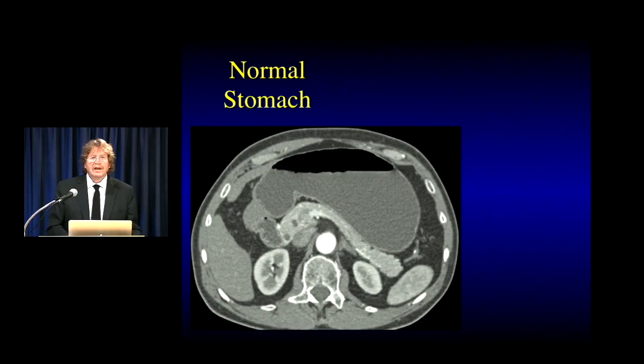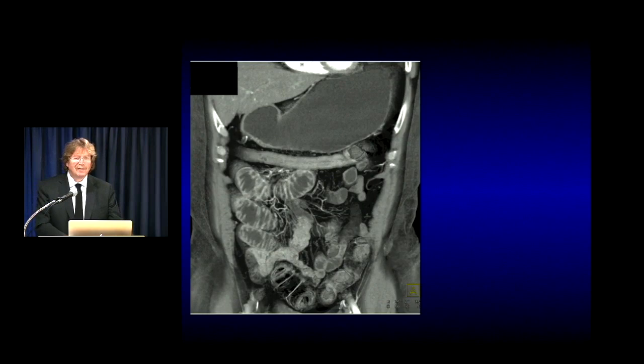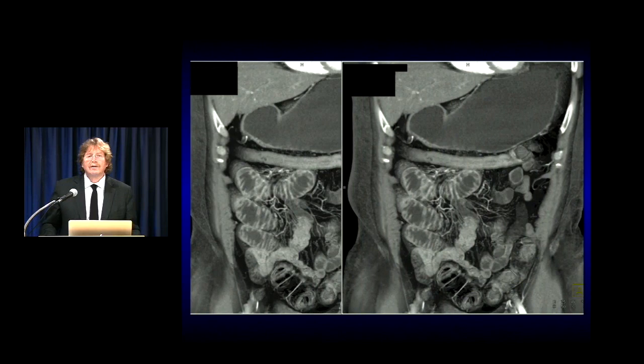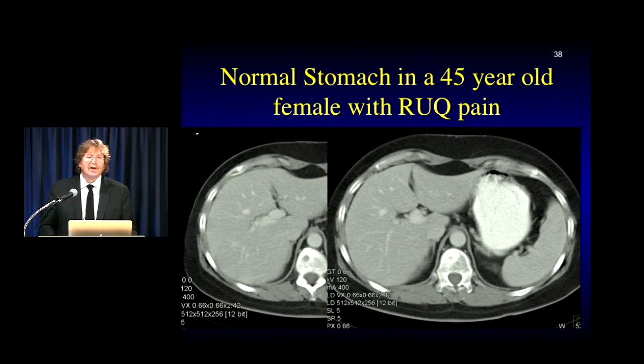Here's a good example of a nicely distended stomach with water. You can see the pancreas nicely, and the wall is barely measurable — just a few millimeters. This patient has a thick transverse colon, but look how nice the stomach is. Whether you're using water or positive contrast like oral Omnipaque, a well-distended stomach shows no wall thickening, no pathology, no confusion.